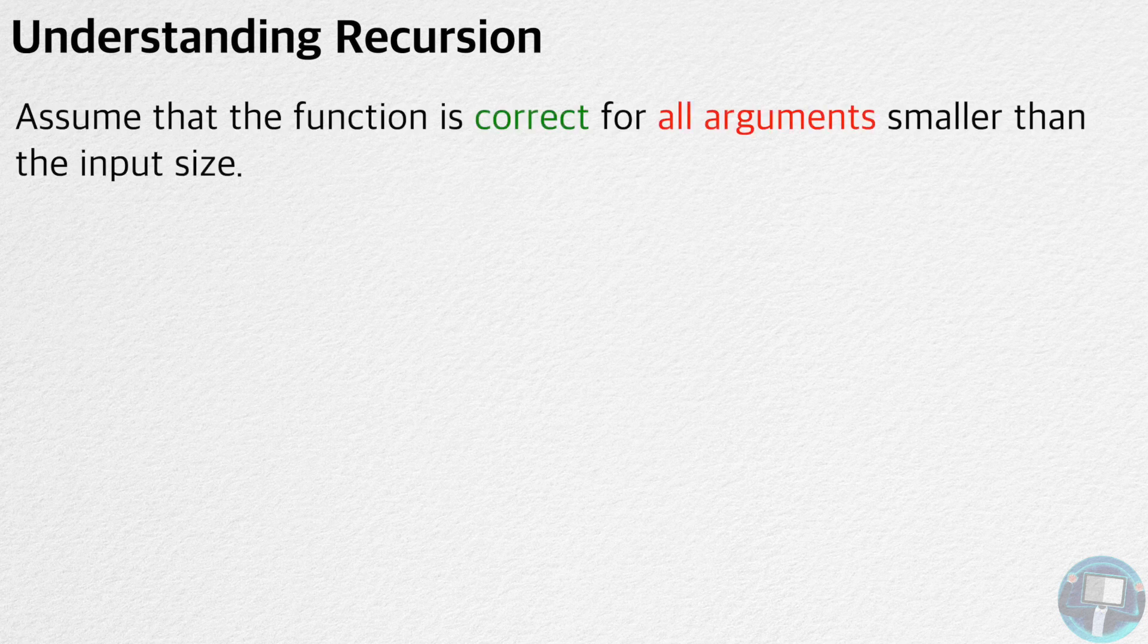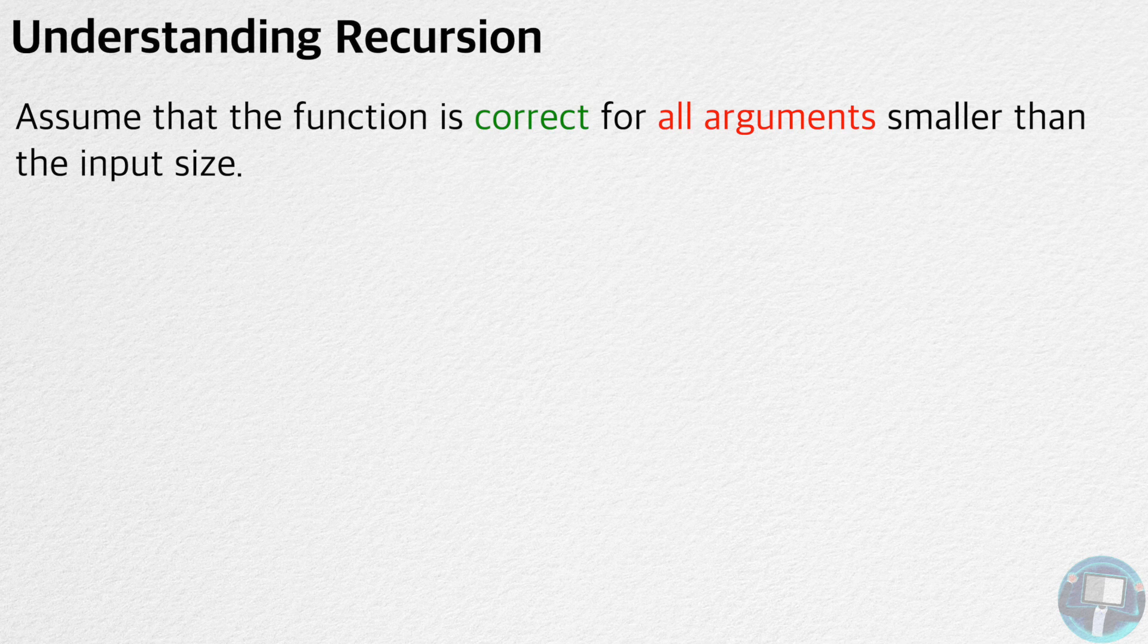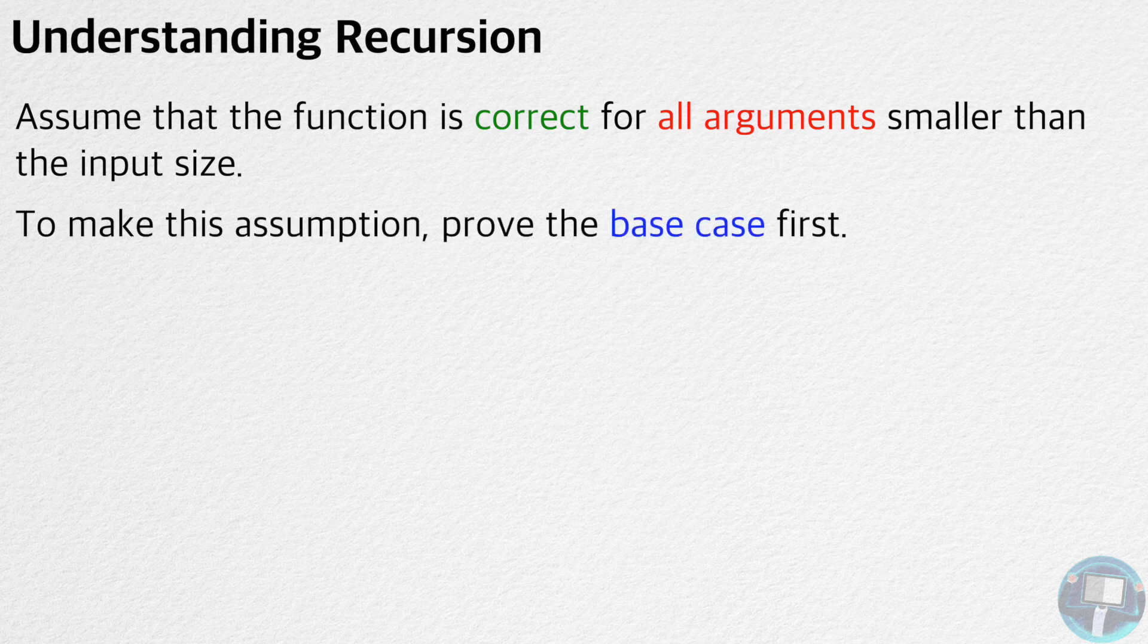The easiest way to understand a recursive function is to assume that the function is correct for all arguments smaller than the input size. The only requirement to make this assumption is to prove that the base case is correct.